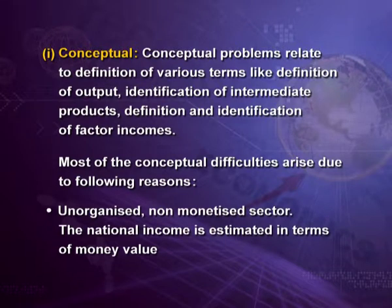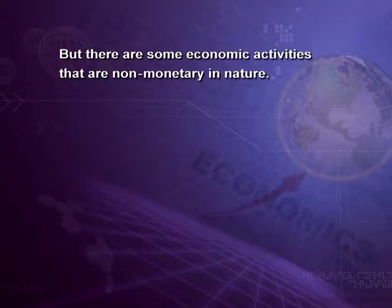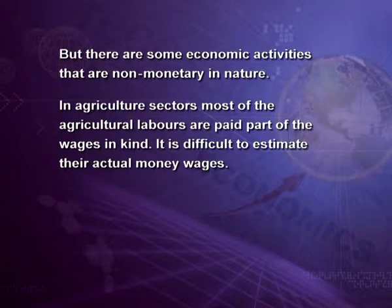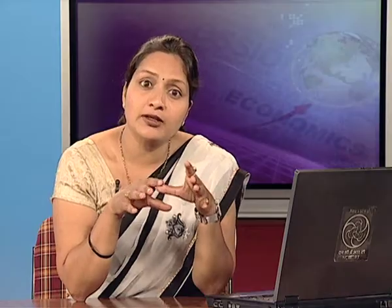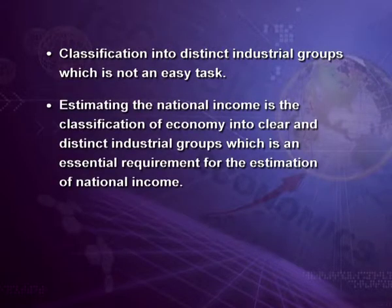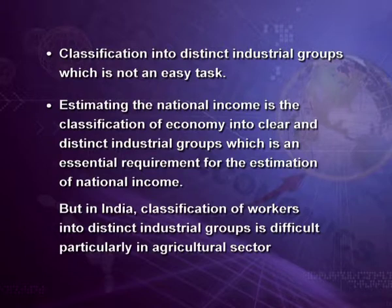Most conceptual difficulties arise due to the unorganized and non-monetized sector. National income is estimated in terms of money value, but there are some economic activities that are non-monetary in nature. In the agriculture sector, most agricultural laborers are paid part of their wages in kind, making it difficult to estimate their actual money wages. Similarly, the amount of food grains produced and consumed by farmers is difficult to conceptualize. Another problem is the classification of the economy into clear and distinct industrial groups, which is essential but difficult — particularly in the agricultural sector.